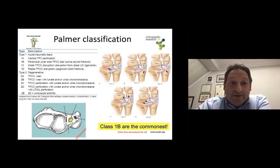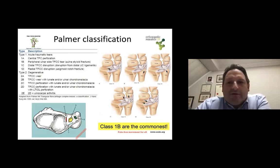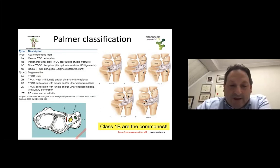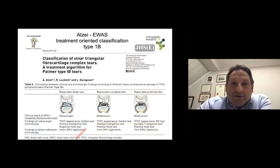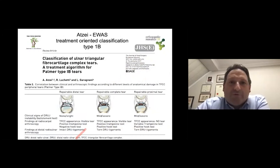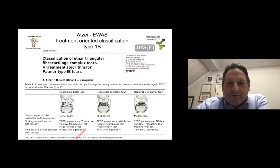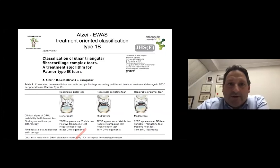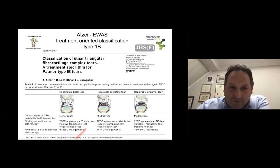The commonest traumatic tear is class 1b, which has led to a lot of literature on this topic, especially regarding treatment. An important treatment-oriented classification to remember is the EWAS — the European Wrist Arthroscopy Society one — which classifies the 1b tears based not only on their characteristics, but also on the repairability of the tears. This is a paper I would recommend reading because it's a review of this classification with a treatment algorithm based on severity and repairability of the tears — useful for your exam.